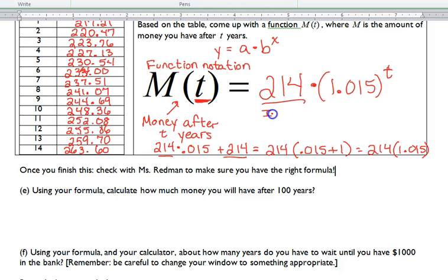This is our initial value. Once again, just like it was in the other example we were doing. So, this right here is one plus our rate as a decimal. And T is the number of years.